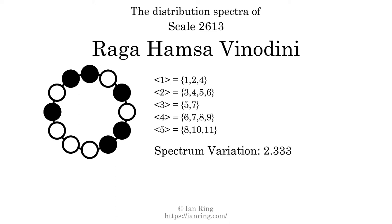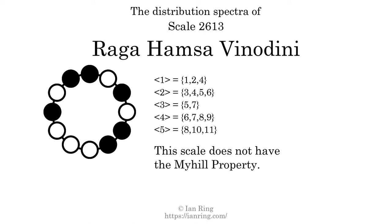The spectrum variation is the sum of all the widths, divided by the number of tones. The spectrum variation of this scale is 2.333. Since the variation is greater than 0, this indicates that the scale is not perfectly even. The highest spectrum width is 3. Since this is greater than 1, we know that this scale is not maximally even. If every spectrum has exactly 2 specific intervals, we call that the Myhill property. This scale does not have the Myhill property. Since the generic interval ranges overlap, this scale is an improper scale.